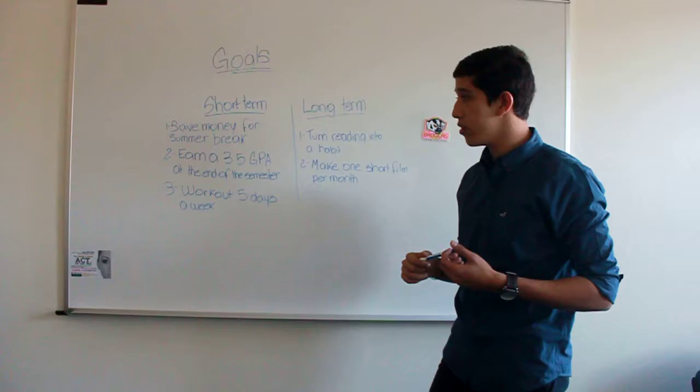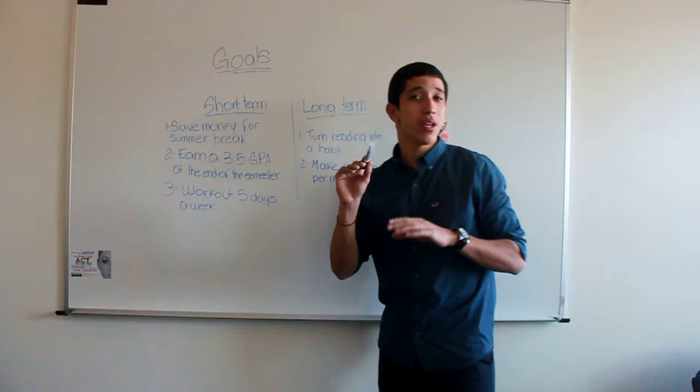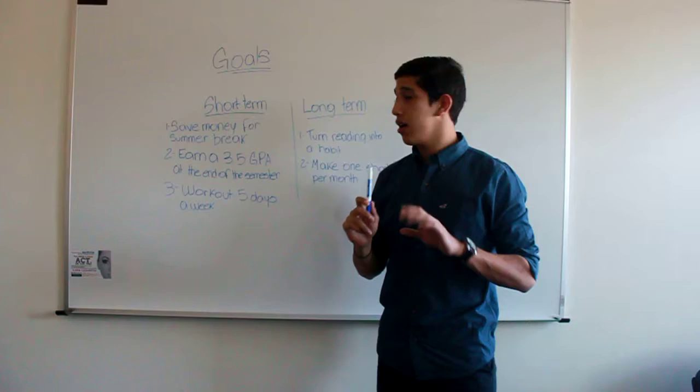The second one is to earn a 3.5 GPA at the end of the semester, and I'm pretty sure I can achieve that. I just have to follow my plan, which is to study one hour per day aside from any distraction. I'm going to sit in the library one hour per day.